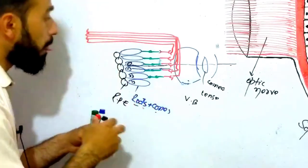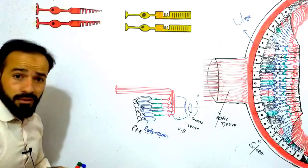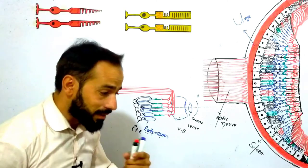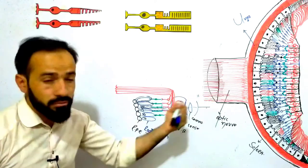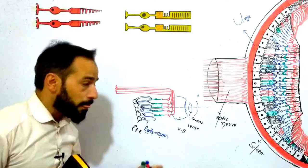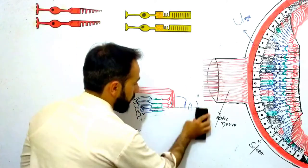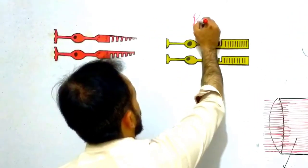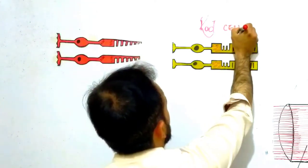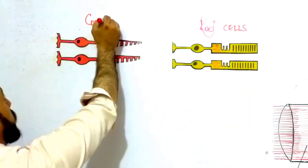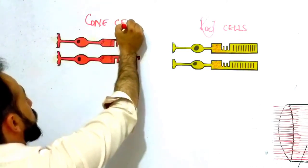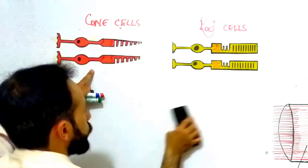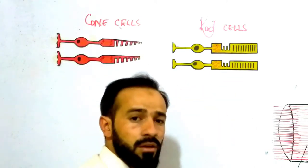Now I am going to discuss the rods and cones — their structure first, then differences between them, then the cells of the retina and layers of the retina. These are your rod cells, and these are your cone cells. They are called cone cells because they have a cone shape — a conical shape. Rod cells are called rod cells because they are rod-shaped.